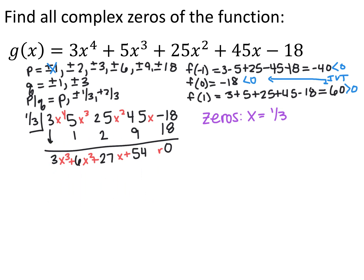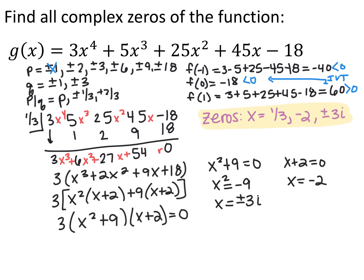I noticed the result factors by grouping — you can tell because the factor from the first two terms matches the factor from the second two terms. I factored out the GCF of 3, leaving x cubed plus 2x squared plus 9x plus 18. From the first two terms I factored out x squared, leaving x plus 2; from the second two terms I factored out 9, again leaving x plus 2. So I was left with 3 times x squared plus 9 times x plus 2. Setting this equal to 0: 3 gives nothing, so x squared plus 9 equals 0 gives x equals plus or minus 3i, and x plus 2 equals 0 gives x equals negative 2. My four zeros are 1 third, negative 2, and plus or minus 3i.